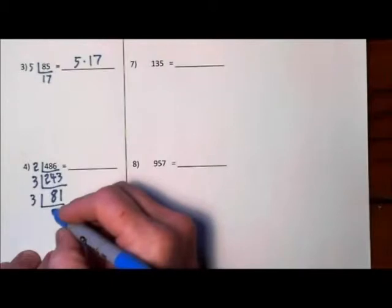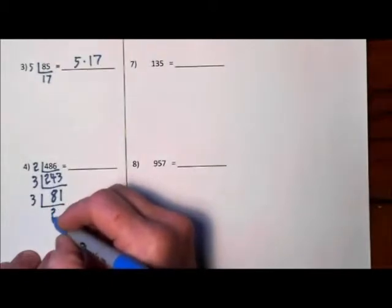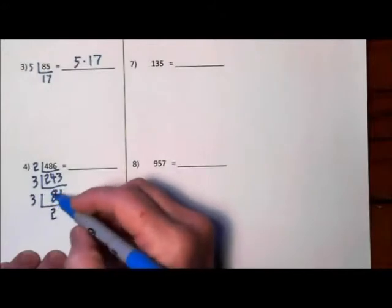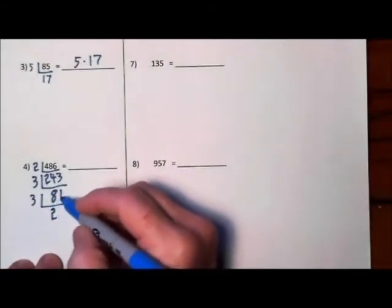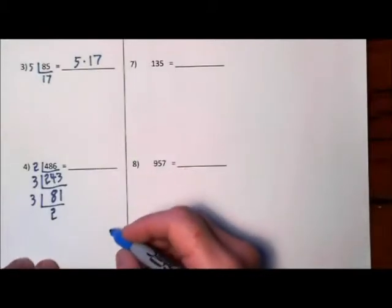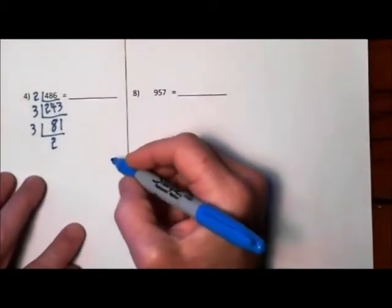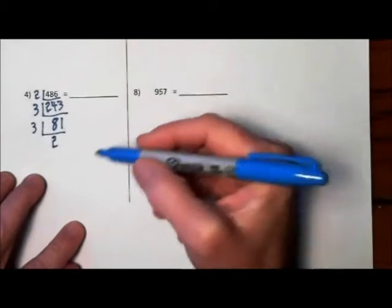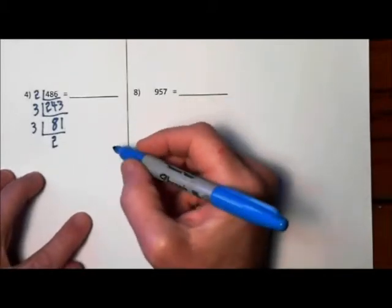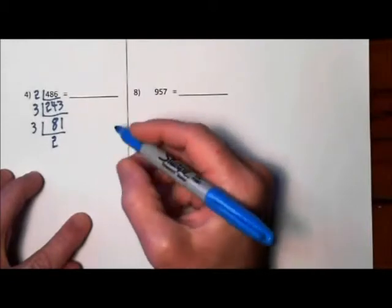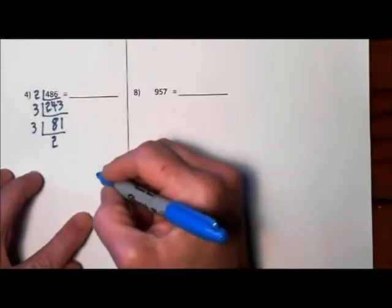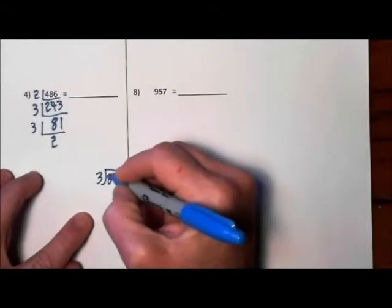3 goes into 8 twice. That would give us a 6, that's 2 left over, so 21. Let me slide this up. I'm doing some of these in my head. And as you get used to it, you will be able to do that as long as you don't lean on a calculator. Do these calculations on paper or in your mind.